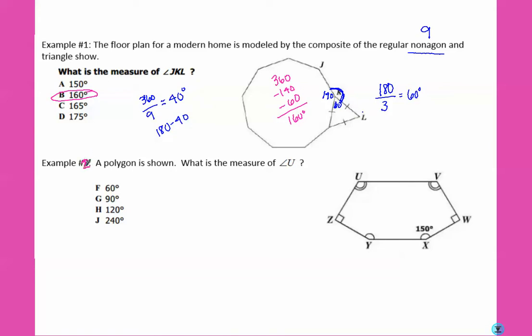Example number two: a polygon is shown. What is the measure of angle U? So remember that these markings mean that they're the same, so X and X. If this one's got a single mark and it's 150, then this one also is 150. And remember that these mean that they are 90 degrees. So this polygon has 1, 2, 3, 4, 5, 6 interior angles.